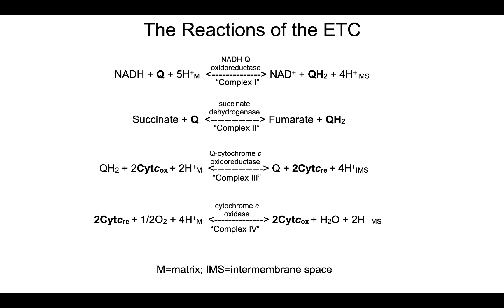For the reactions of the electron transport chain, you should know: complex I is also called NADH-Q-oxidoreductase; complex II is succinate dehydrogenase; complex III is Q-cytochrome C-oxidoreductase; and complex IV is cytochrome C-oxidase. Know what is the source of electrons — what is being oxidized and what is being reduced. For example, NADH is being oxidized and used to reduce Q to QH2. Also know how many protons are moving from the mitochondrial matrix (M) into the intermembrane space (IMS).